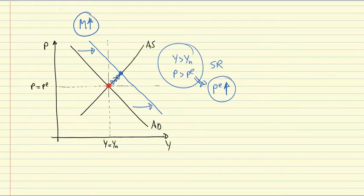So as AS shifts up, it continues to do so until we're reaching this new equilibrium at which again Y equals YN and P equals PE. Let me denote as well this point where P is larger than PE and this move which is that PE increases.